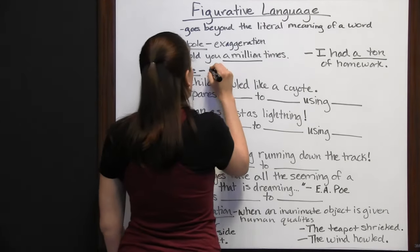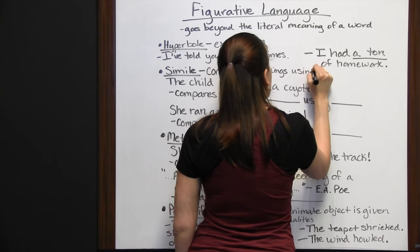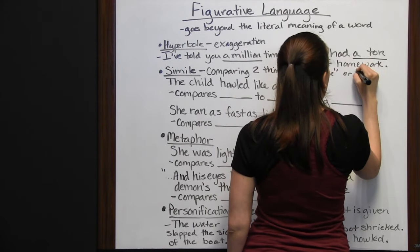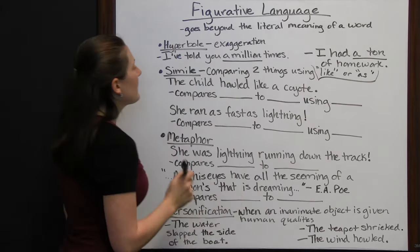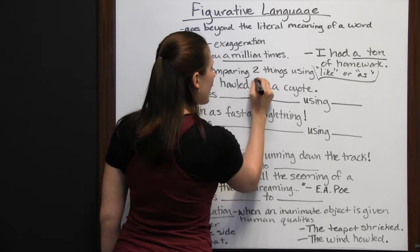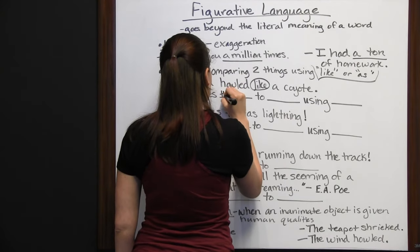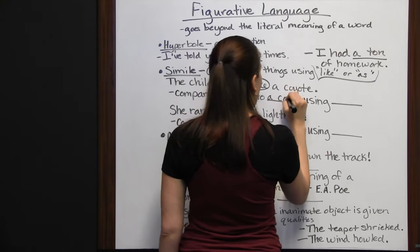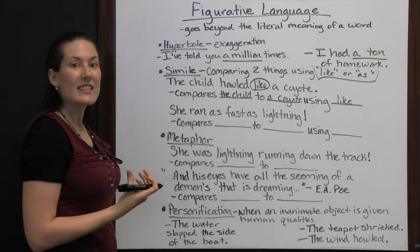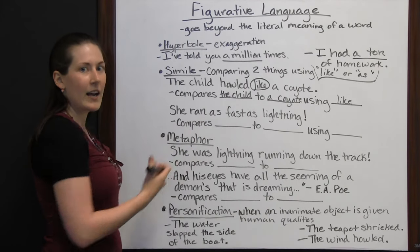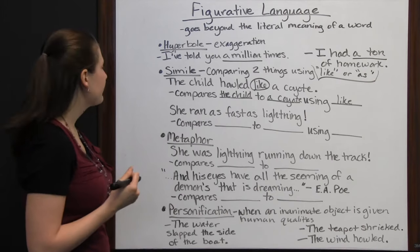Next we've got simile, which is comparing two things using 'like' or 'as.' This is very important — you have to use those words 'like' or 'as,' or it's not going to be a simile. For example: 'The child howled like a coyote.' We see the word 'like.' You're comparing the child to a coyote. This figurative language brings a coyote to mind to help you picture and hear how this child is screaming or crying.